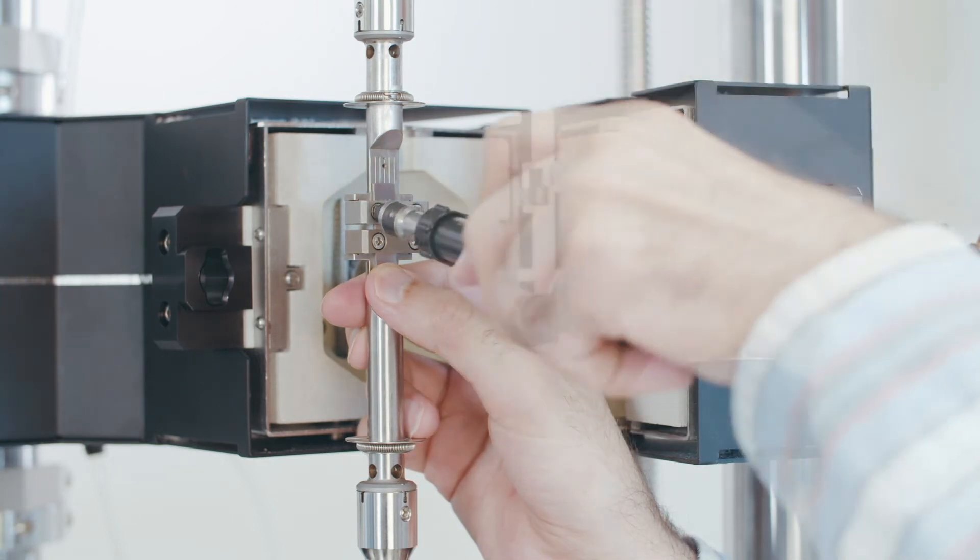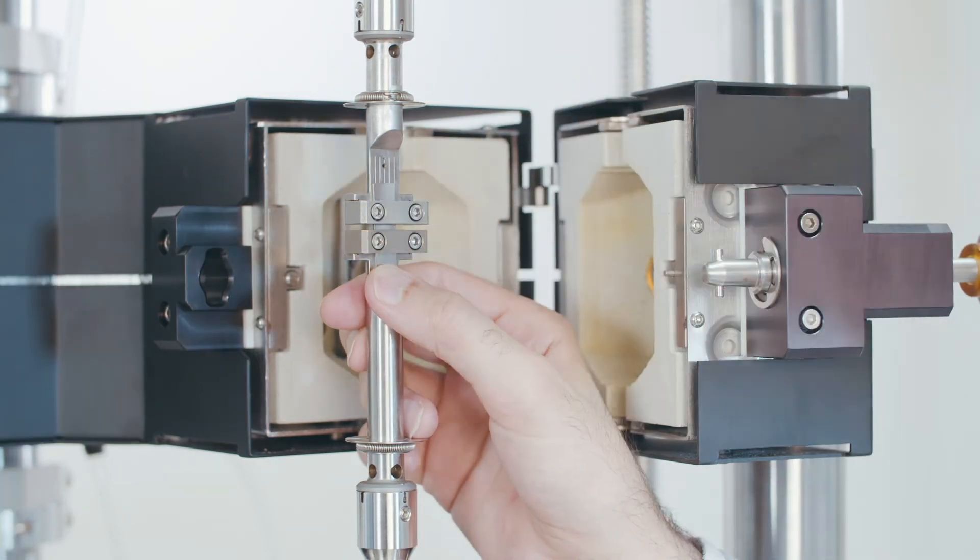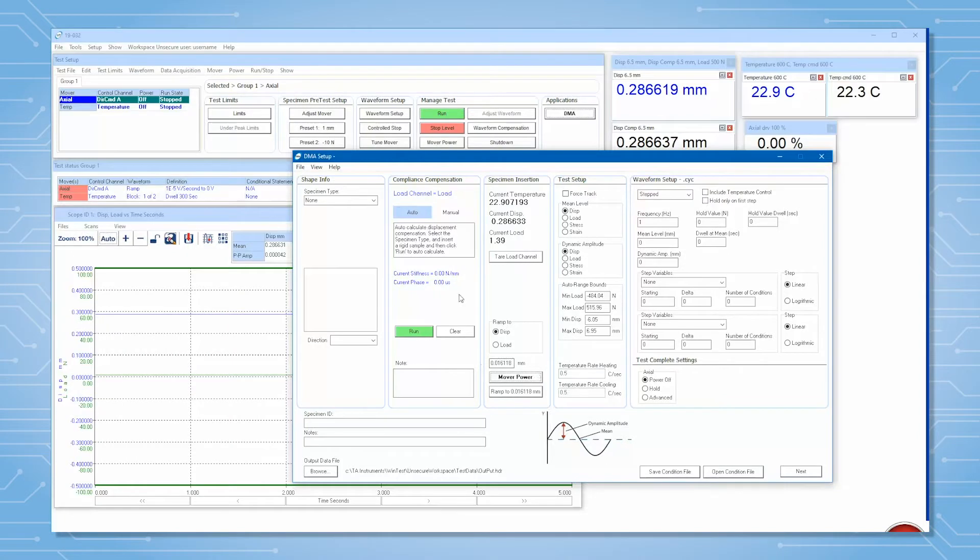Mount the steel bar on your grips and tighten the screws using a torque wrench. In the DMA application, select the testing direction from the drop down menu in the shape info panel. It is not necessary to add the dimensions of the rigid sample to complete this step. Click on auto and press run. A predetermined load will be applied to the rigid sample and system compliance is calculated automatically.